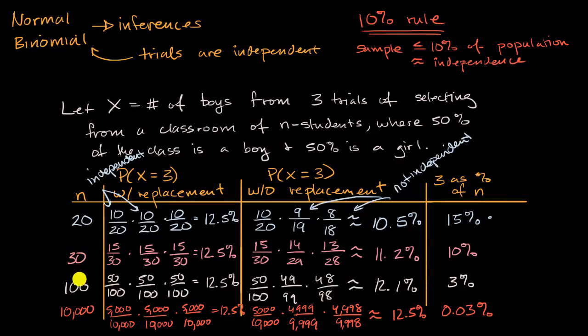But as we increase the population size without increasing the sample size, we see that these numbers get closer and closer to each other. All the way so that if you have 10,000 people in your population and you're only doing three trials, that the numbers get very, very close. This is actually 12.49 something percent. But if you round to the nearest tenth of a percent, you see that they are close.